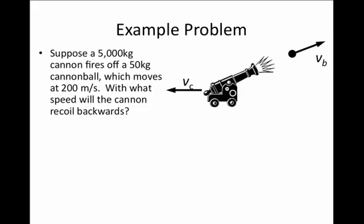Cannonballs generally move very fast. We'll assume that this one moves at approximately 200 meters per second, or about two-thirds the speed of sound. We can ask what will be the speed of the cannon which recoils backwards after the expulsion of this cannonball.